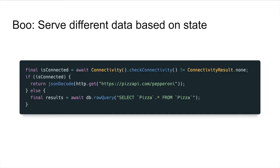Or say you have a situation where you want to be offline first and you're constantly checking: am I online? Do I have Wi-Fi connection? Do I have cellular connection? What's my bandwidth? It shouldn't matter. You should just always serve the same data — there shouldn't be a whole bunch of control statements throughout your app. BRIC does this automatically.